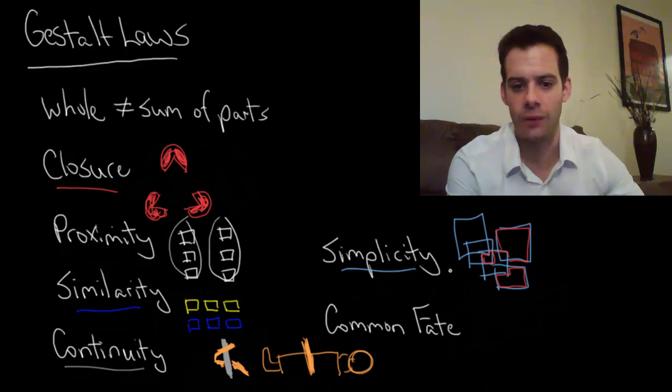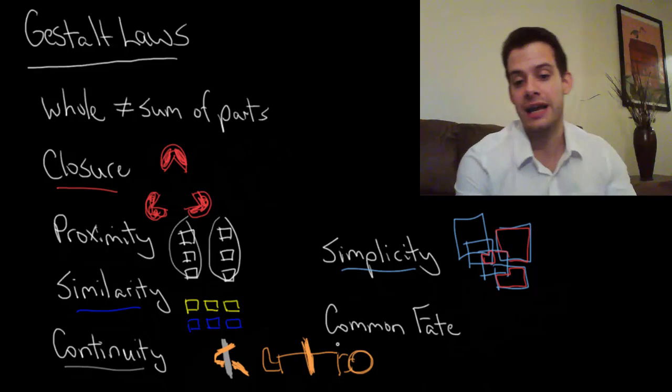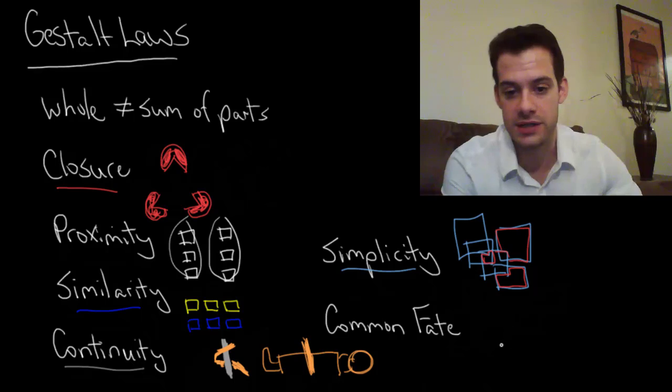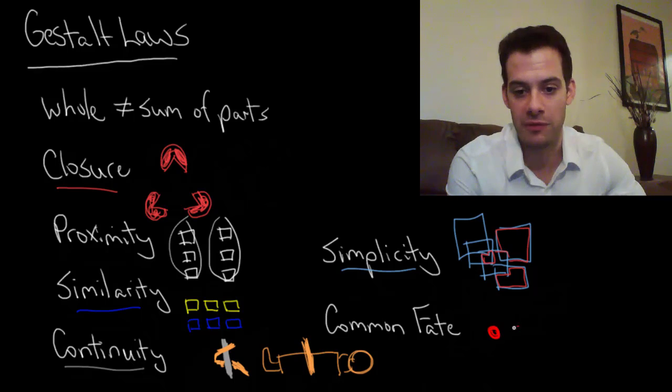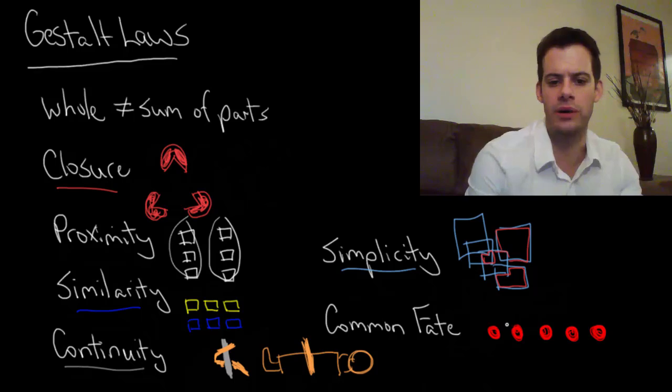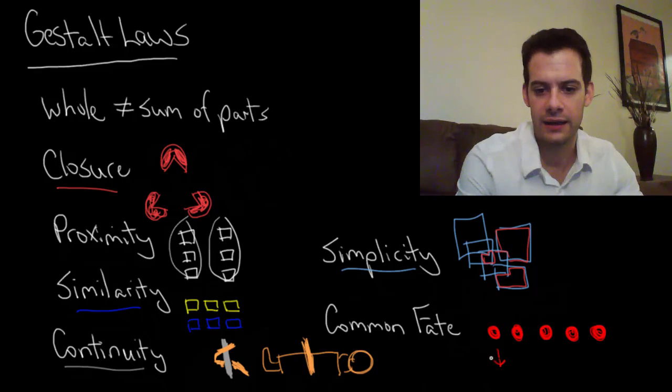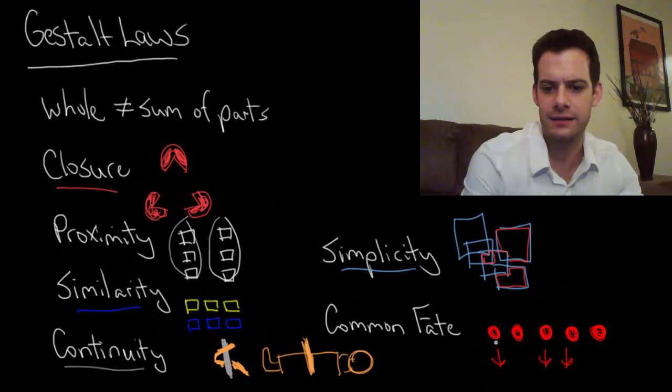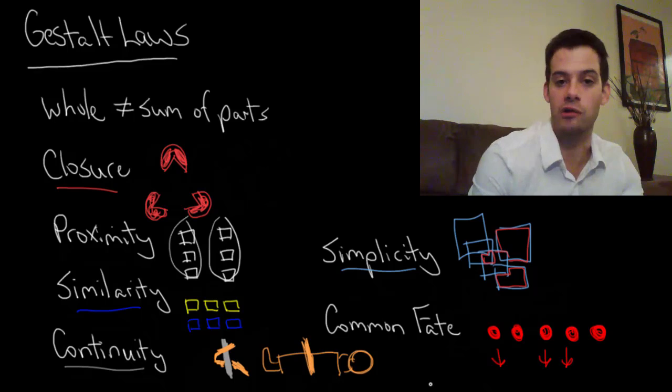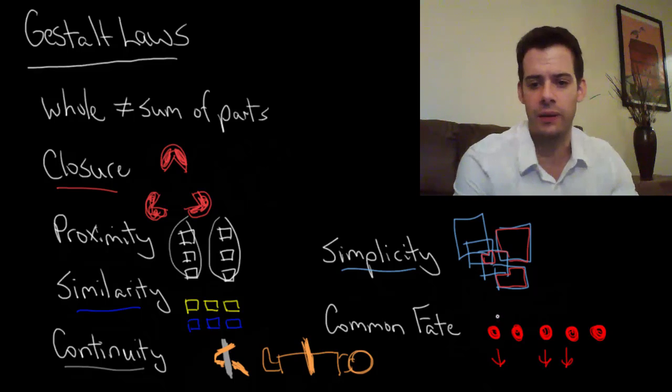Okay and the last Gestalt law we have is common fate. And this one is the idea that things that move in the same direction are perceived as a group. So if we were looking at a group of objects here, if you're looking at these you might perceive these all as one group when you first look at them. But if suddenly these three of them all moved away at the same time you would suddenly perceive those three as being a group, and the two that remain there as being a different group.